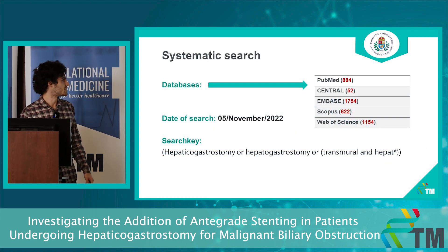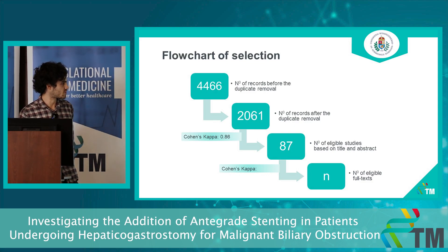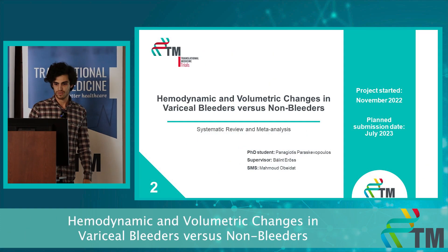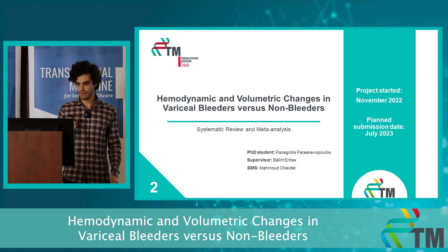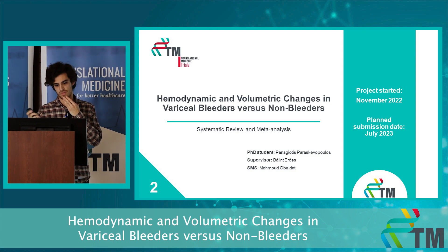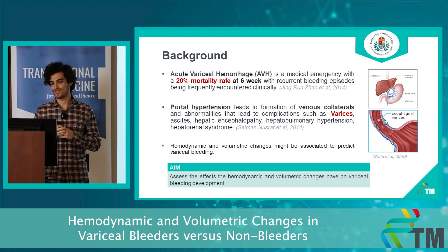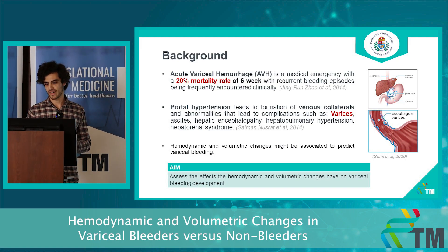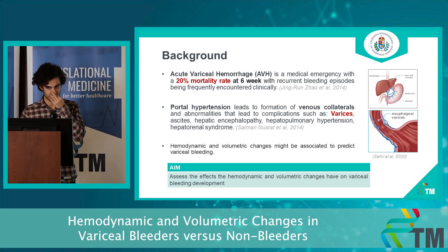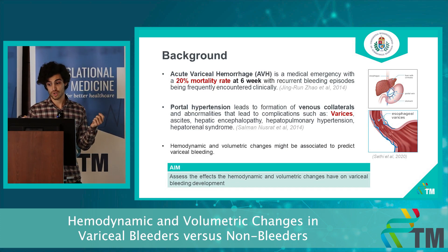We have five databases from CERTZ and here is where we are with our progress — I will soon finish with full-text selection. For my second project, I'm not exactly sure yet what it will look like, but I know it will be about the hemodynamic changes in bleeders versus non-bleeders. Portal hypertension leads to the formation of venous collaterals, and acute variceal hemorrhage is my main concern, as it is a medical emergency with a six-week mortality of 20%.